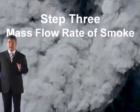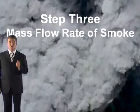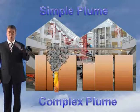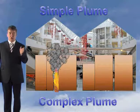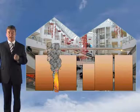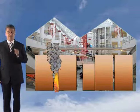Step three is determining the mass flow rate of smoke — how much smoke is that size fire going to give off in our reservoir, in our compartment? We firstly need to establish whether this is a simple plume or a complex plume. In this case, the design fire is located in the reservoir where it's going to be extracted, and so it's classified as a simple plume.